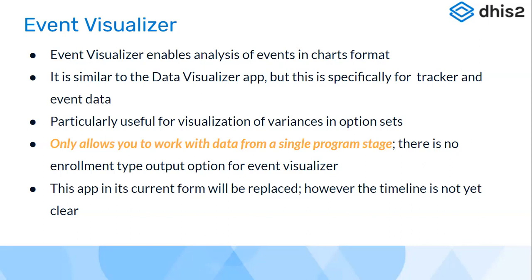Unlike Event Reports, which supports the enrollment-type output allowing data selection from different stages, that feature is not yet implemented in Event Visualizer. The key limitation is that with Event Visualizer you can only work with data from a single program stage at a time — for example, either the clinical diagnosis stage or the lab result stage, but not both simultaneously.